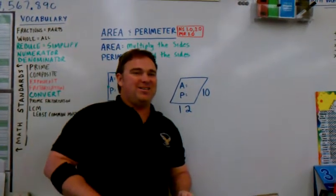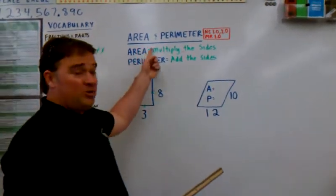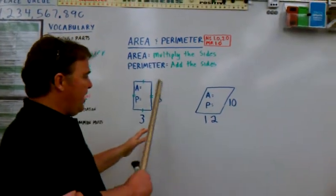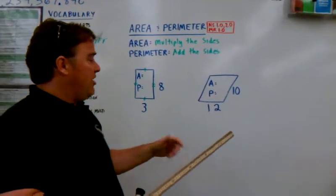Hello and welcome back to Mr. Cooler's class. Nice to see you. Alright, today we're going to do area and perimeter. This is when you add the sides or you multiply the sides of a figure.